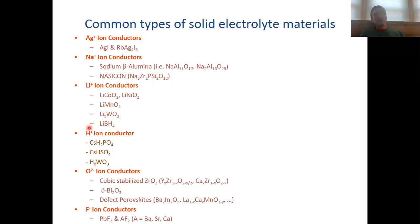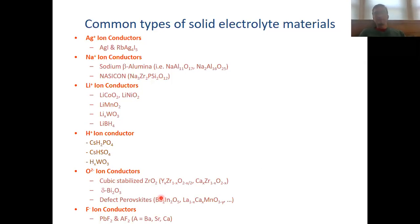You see that these are all cations. There are also a few anion conductors, in particular oxide anion conductors such as cubic stabilized zirconia, bismuth oxides, and defect perovskites, as well as fluoride ion conductors such as lead fluoride and earth alkaline fluorides. When you look at the cations, you see that they all have a 1-plus charge.